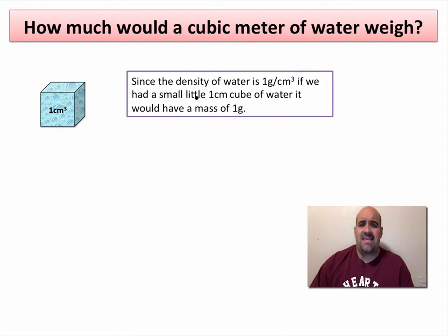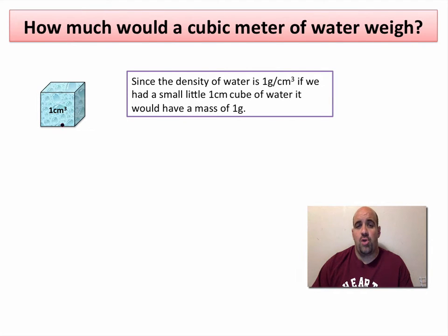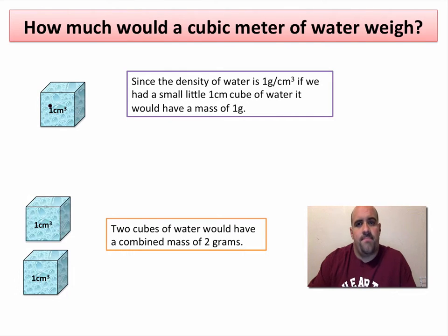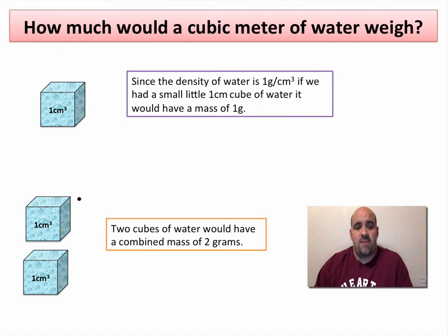Since the density of water is one gram per centimeter cubed, if we had a small little cube of water — let's say a one centimeter cube of water — that cube of water would have a mass of one gram. That's the definition of the density of water. Every centimeter cube you have of water should weigh roughly one gram. So if you had two centimeter cubes of water, the combined mass of both of them should be two grams.